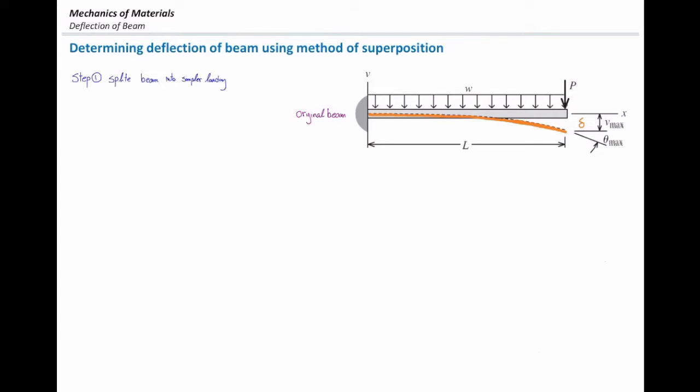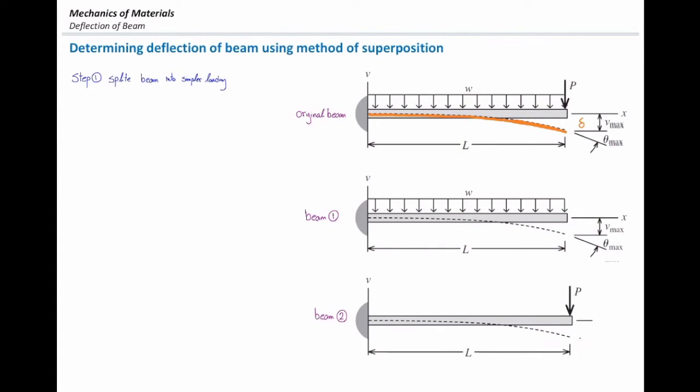To determine that, we need to split this structure into simpler parts, those parts that we can find the loading in the table. There is not any loading that matches these two loads in that table. So I need to split that into these two parts, this one and this one, and for each of these two parts I can determine how much is the deflection at the right end. Let's focus on the second beam.